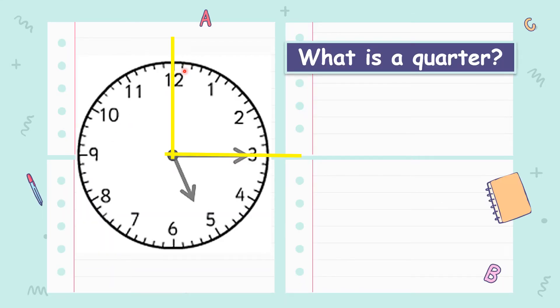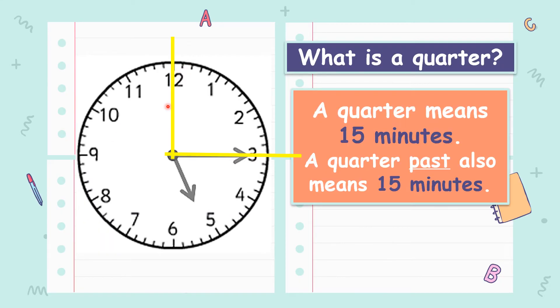So what is a quarter? A quarter means 15 minutes. A quarter past also means 15 minutes. So how do you know it's 15 minutes? Let's count.